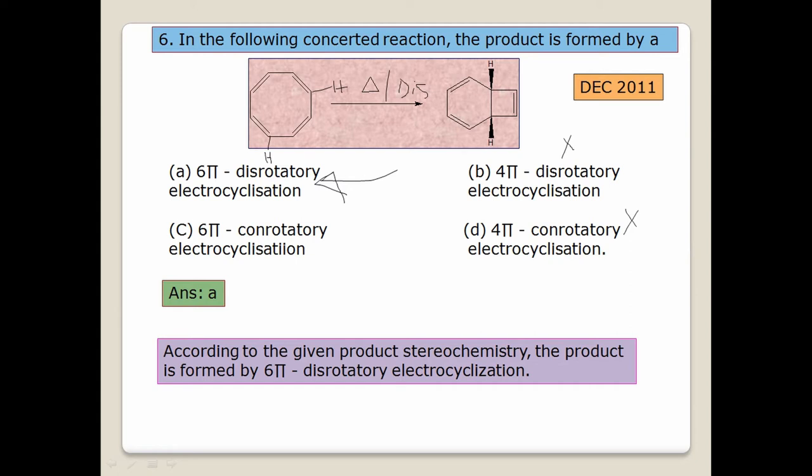Out of the 6π options, disrotation is allowed because the hydrogens are opposite — opposite groups coming to the same side is disrotation. Therefore answer A is the correct answer.